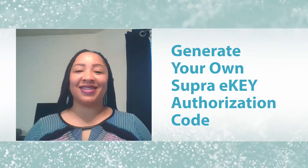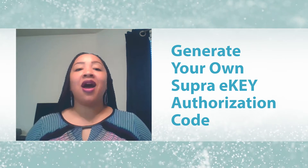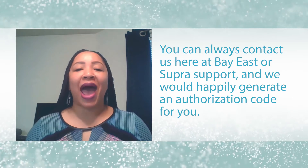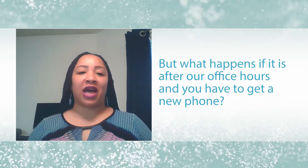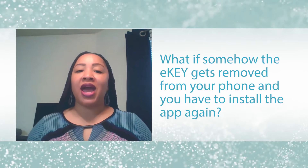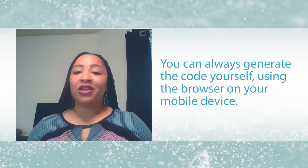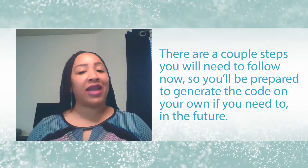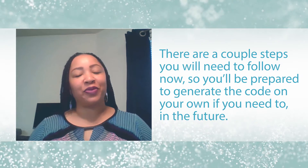Hi, my name is Nicole Shivers and today I want to show you how to generate your own Super E-Key authorization code. Of course, you can always contact us here at BayEast or Super Support and we would happily generate an authorization code for you. But what happens if it's after our office hours and you have to get a new phone? Or what if somehow the E-Key gets removed from your phone and you have to install the app again? Well, you can always generate the code yourself using the browser on your mobile device. There's a couple steps you'll need to follow now so you'll be prepared to generate the code on your own if you need to in the future. Let's take a look.